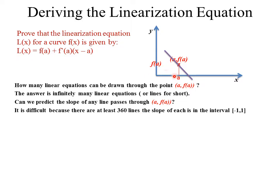Since there are at least 360 lines, each line will have an independent and different slope, giving at least 360 slopes around this point. Each slope has a value, and every real number between minus one and plus one qualifies as a slope value, making them infinitely many. Our theorem, however, will be based on the standard 360 degrees, so we assume 360 different slopes.